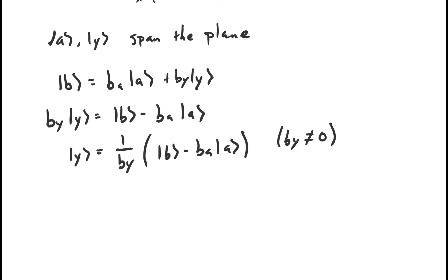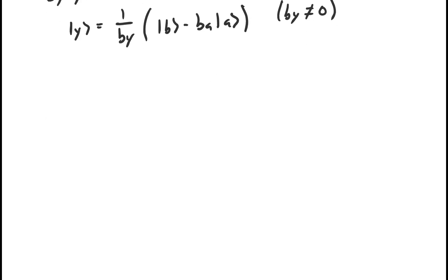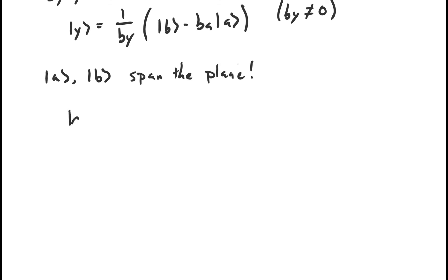Now that we can express y in terms of b and a, anywhere we see a y in a linear combination of a and y, we can replace it with a linear combination of a and b. So since a and y span the plane, so too must a and b. We've arrived at the conclusion that a and b, just like x and y, span the plane — which means vector c can be expressed as a linear combination of these two vectors, meaning the three vectors a, b, and c are linearly dependent.